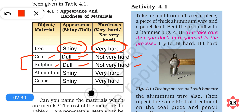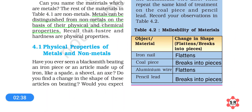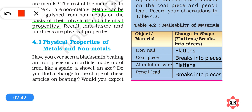We can differentiate between metals and non-metals on more physical properties. In the NCERT textbook PDF, I have underlined some important points that you can use while making your notes. So what we are going to discuss are the physical properties of metals and non-metals. One thing we have noted is that metals are shiny in appearance and they are very hard.